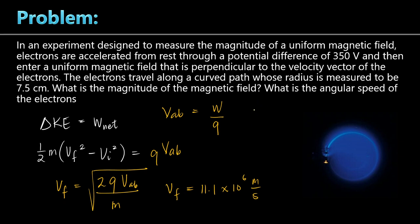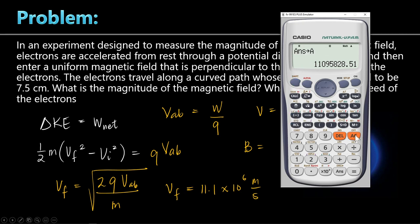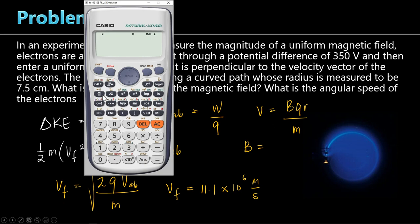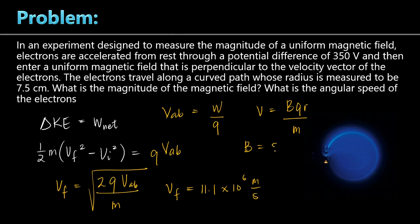Now, the question asks for the magnetic field magnitude. From the velocity formula v equals BQR over M, we can isolate B: B equals MV divided by QR. In the calculator: electron mass (constant 03) times velocity stored in A, divided by electron charge (constant 23) times radius 0.075 meters. The answer is 8.4 times 10 to the minus 4 Tesla.